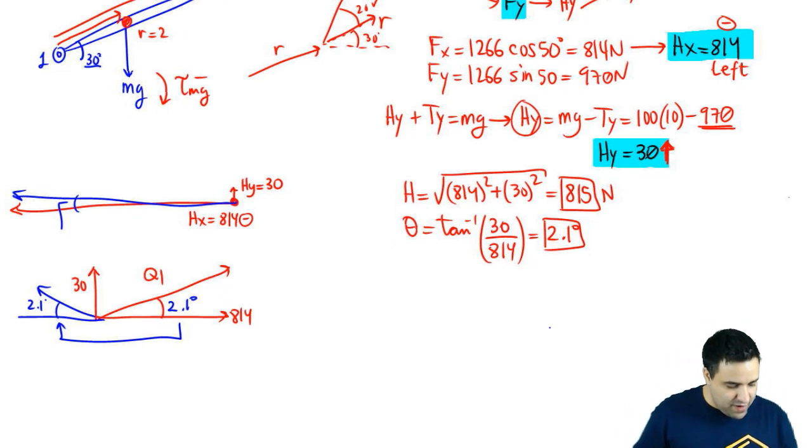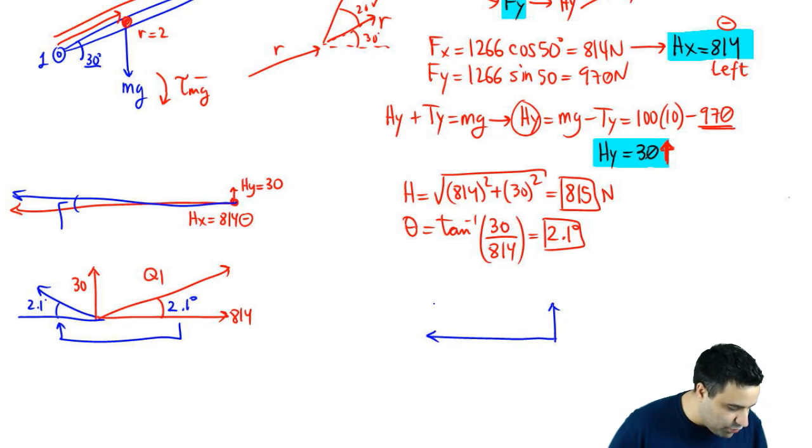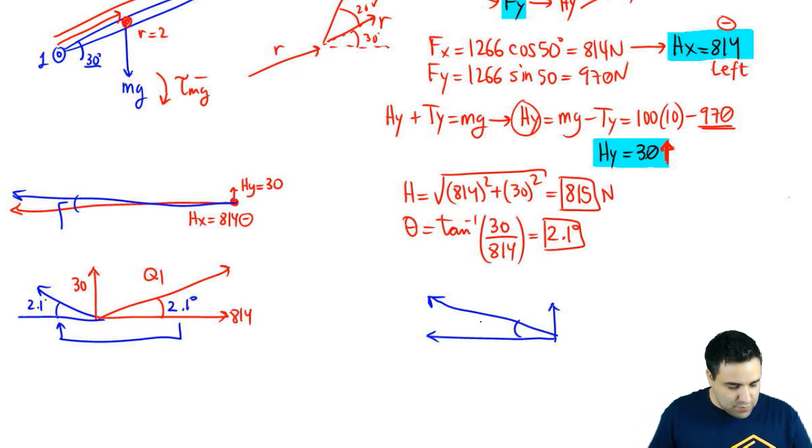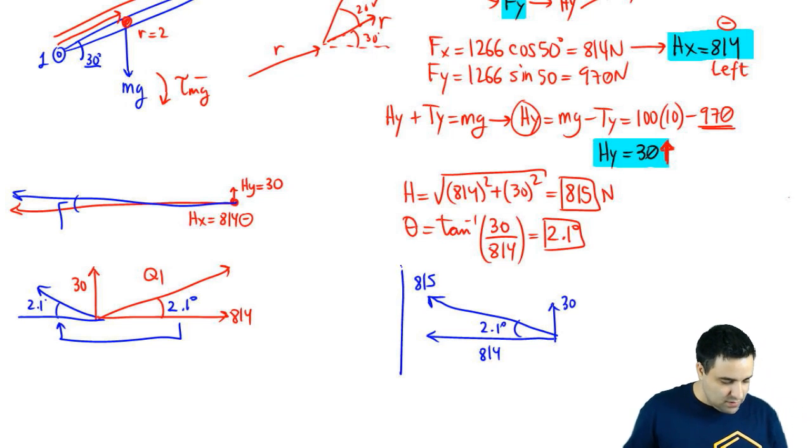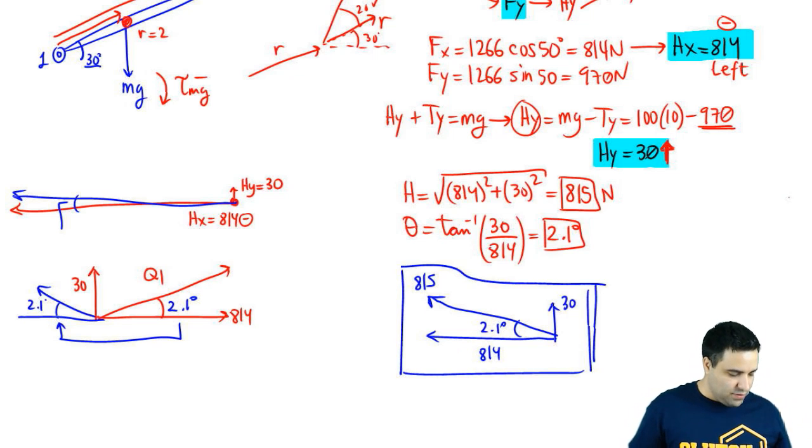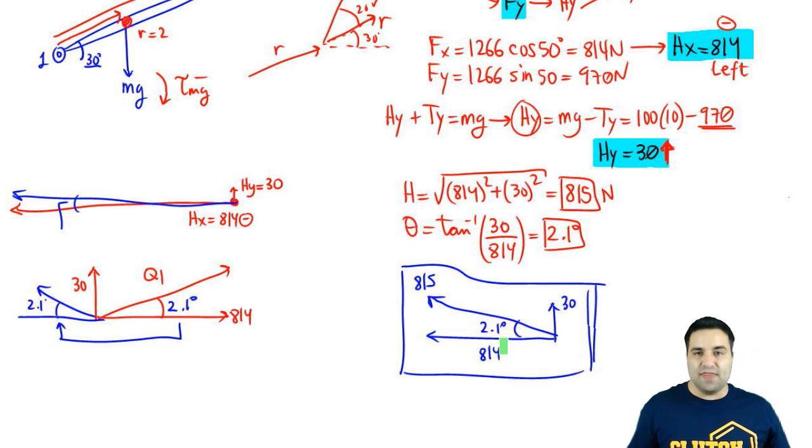So what I would do is I would draw this here. Let me just have this here so that you have it as part of that explanation. But for your final answer, I would draw so you can illustrate where that angle goes. That looks terrible, but we're just going to leave it there. 2.1 degrees. So you can show exactly where that angle goes. This is 30. This is 814. This is 815. So this is the final H vector if you want to also show where the angle goes. And that's it for this one. So a little tricky. Different angles. Had to figure out which ones to use. Hopefully this made sense. But let me know if you have any questions and let's keep going.